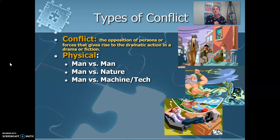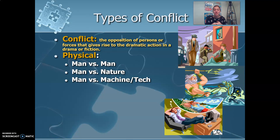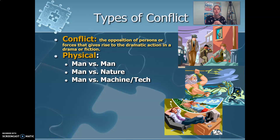The next one is man versus machine or technology. Anything that is not from nature that could be holding our character or characters back is going to be man versus machine or technology. Think specifically like if they're in a car that's not working, or we see a lot of science fiction — like 'The Fun They Had' that we read, where the robot was holding Margie and Tommy back from learning. Those types of things based on technology or machinery, anything holding back characters from making progress on that plot triangle, is called man versus machine.